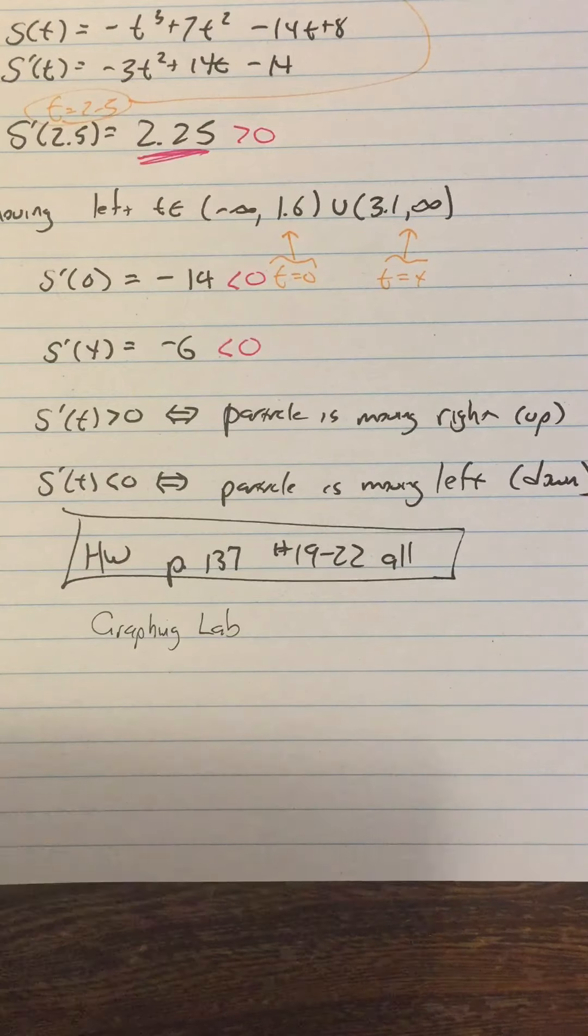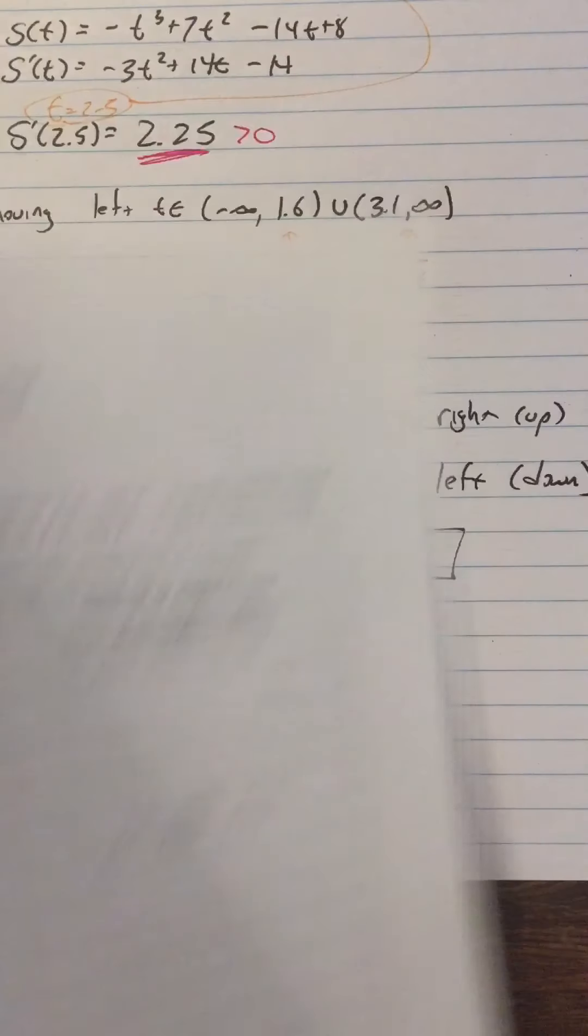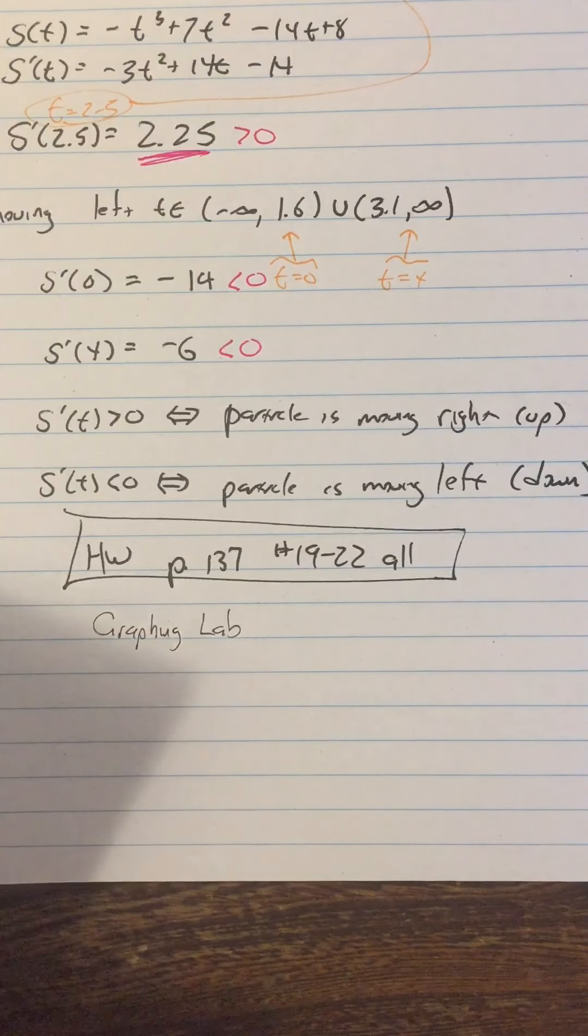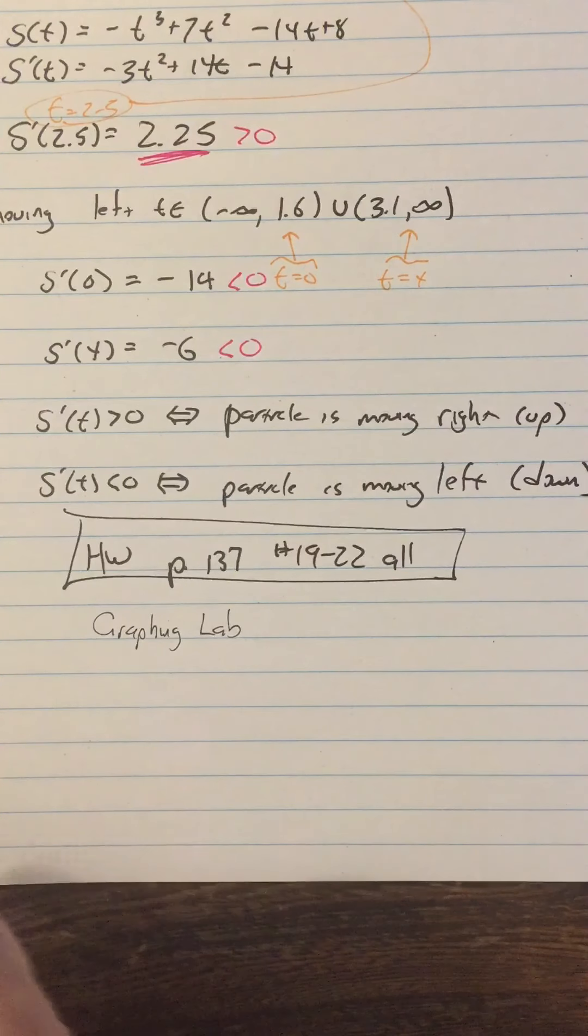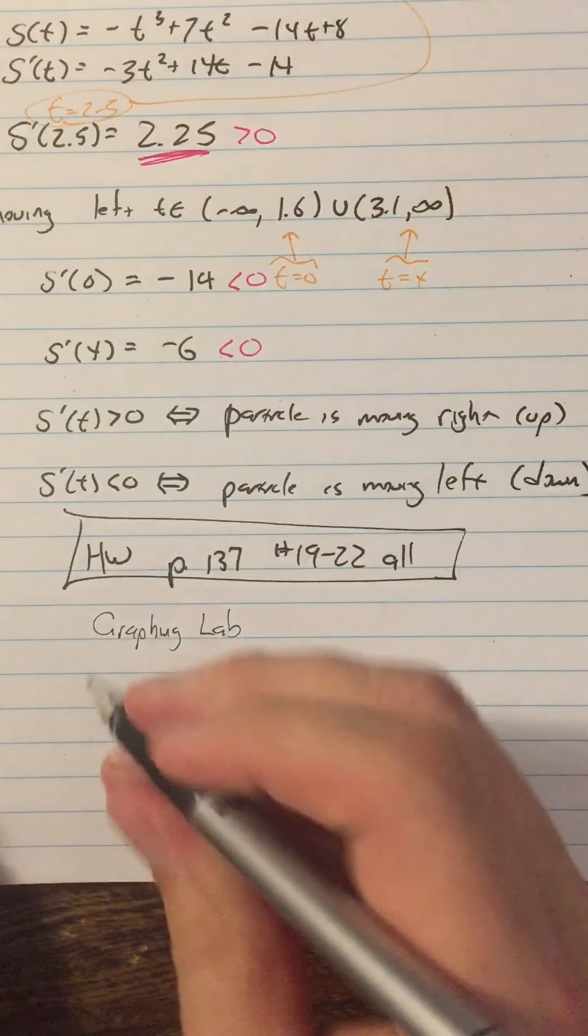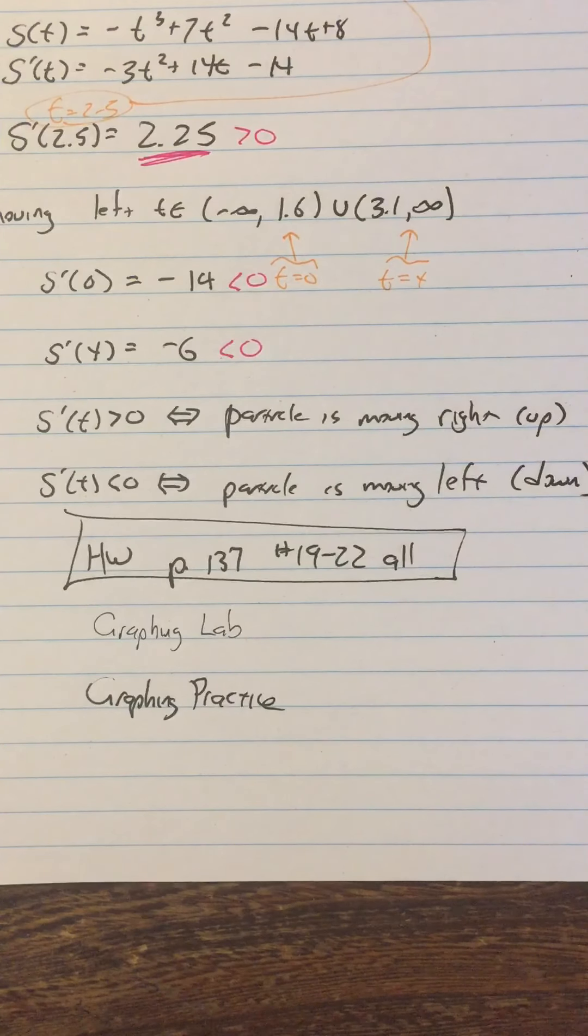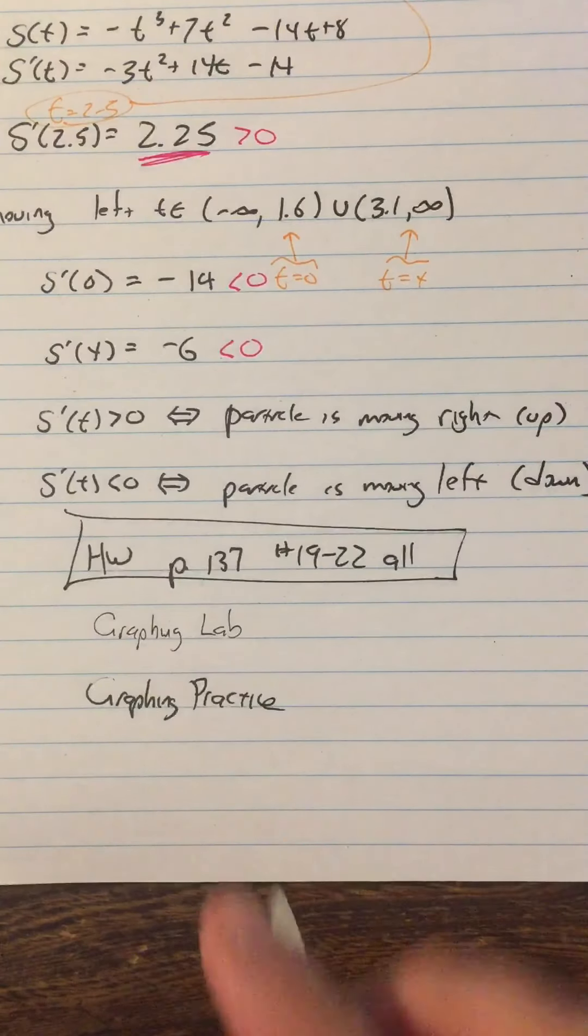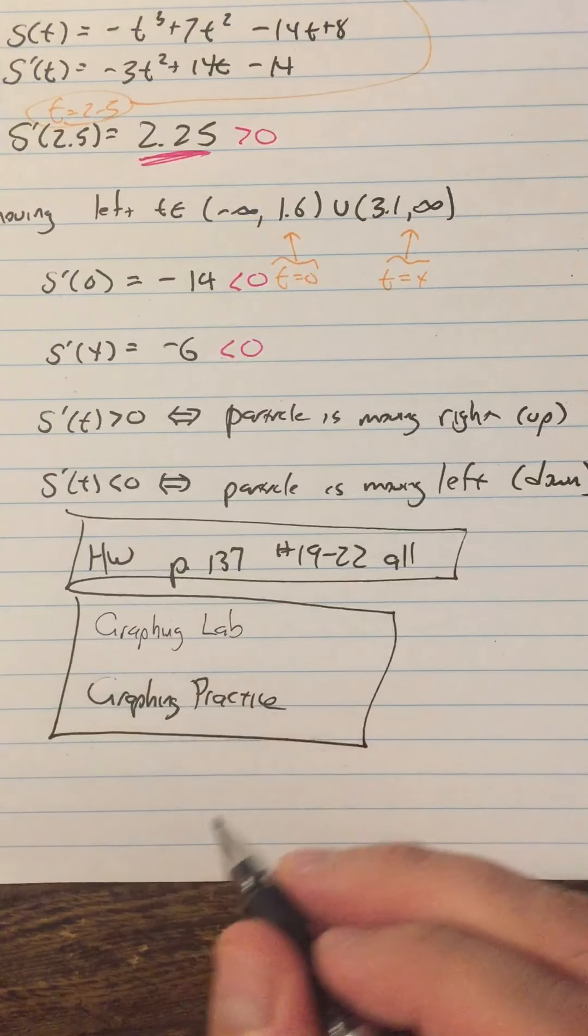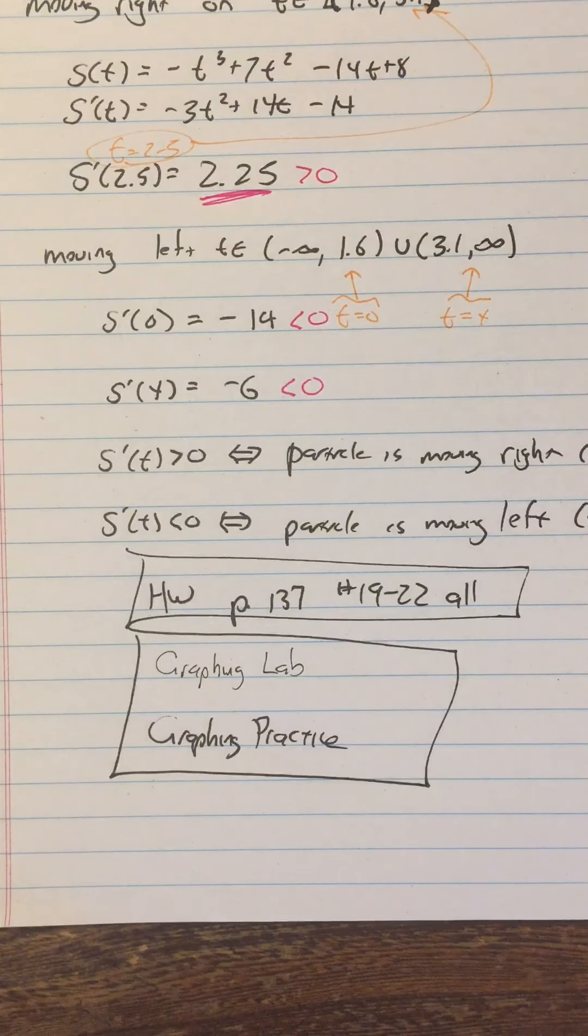Remember in the graphing lab, we did number one together, but you still got to do number two. So that's what I mean by graphing lab. And then the third thing is graphing practice, and that's this guy that we just were going over, and that is posted on the Google Classroom. Both of these are posted on Google Classroom. They're also on the handouts page of the website. That is your homework, and that is it for today. Have a good weekend.